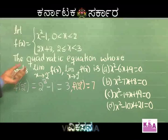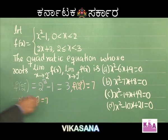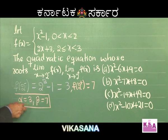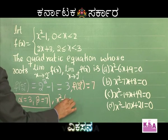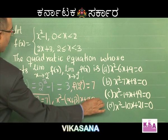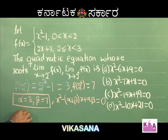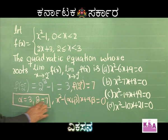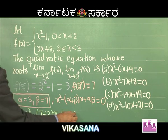Alpha = 3 and beta = 7. The quadratic equation with roots alpha and beta is given by x² - (alpha + beta)x + alpha·beta = 0. This is a familiar concept. So we write x² - (3 + 7)x + (3 × 7) = 0, which gives x² - 10x + 21 = 0.